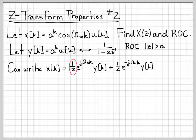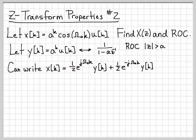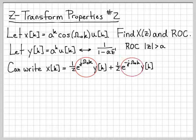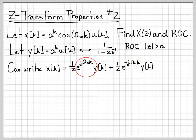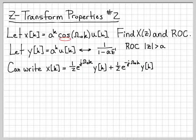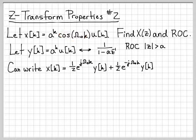If you factor out the 1/2 and y[k] from each of these terms, what you're left with is [e^(jω₀k) + e^(-jω₀k)]/2, which equals cosine. That's just using Euler's formula to write cosine in a different way, and then we've distributed out the multiplication.